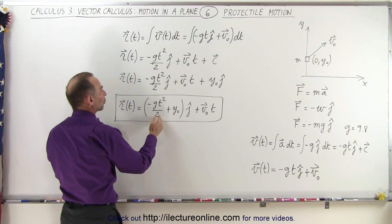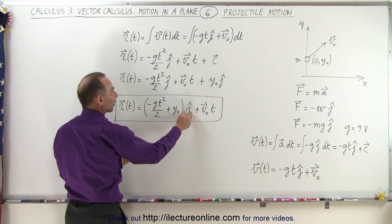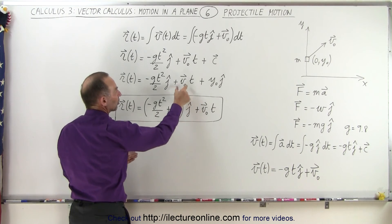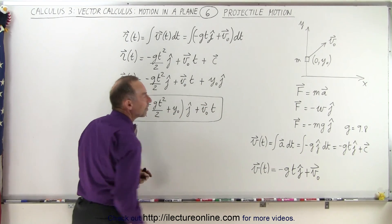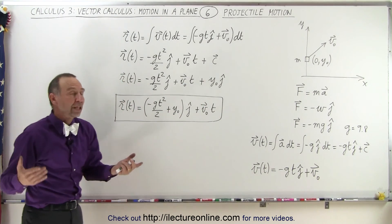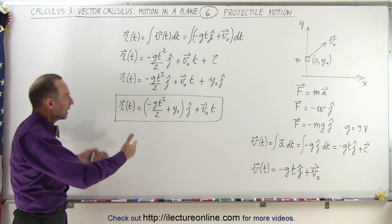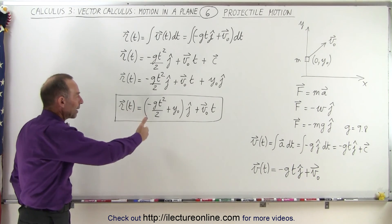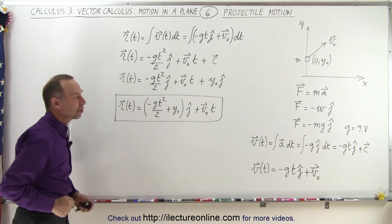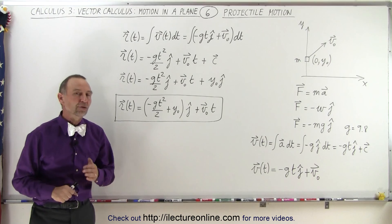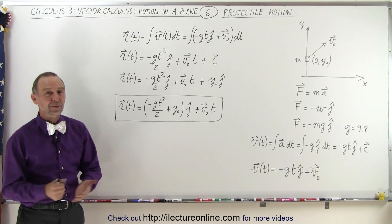So now we have the position vector as: minus g·t² over two plus y-sub-naught in the j direction, plus the initial velocity times t. That would be a general way of describing, using vector notation, projectile motion in two dimensions — and that's how it's done.